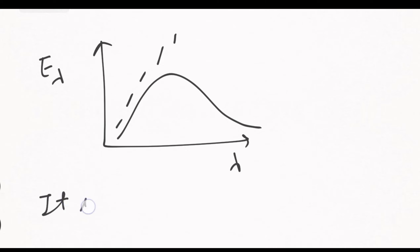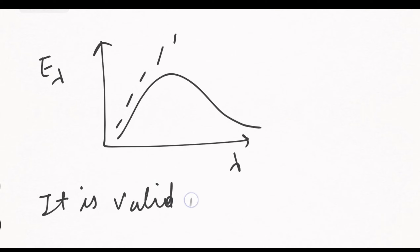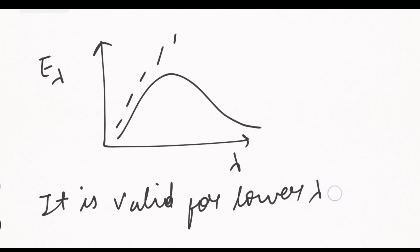Wien's radiation law uses an exponential decay term and is valid for the lower wavelength region only. At higher wavelengths, Wien's radiation law failed — it could not explain the higher wavelength region.